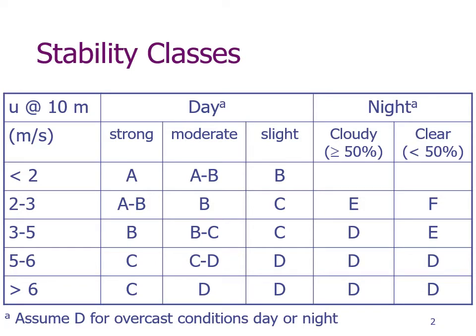This table shows the wind velocity at 10 meters in the left column, and then it shows whether it's daytime or nighttime. During the daytime, you have strong, moderate, or slight solar radiation. During nighttime, it's either cloudy or clear. On the next slide, I'll show you what the definitions are of strong, moderate, and slight solar radiation. Note that you would assume class D, neutral conditions, for overcast or cloudy conditions, day or night.